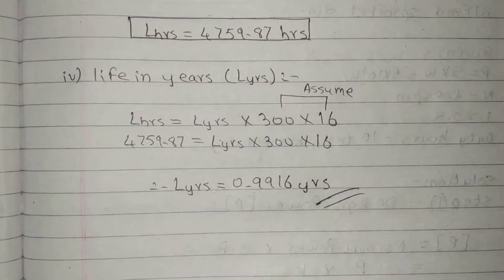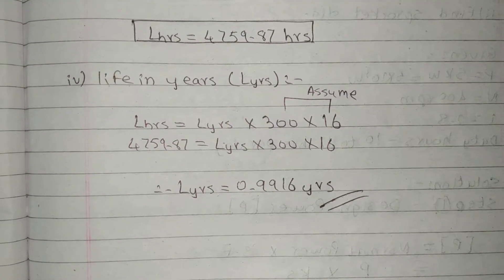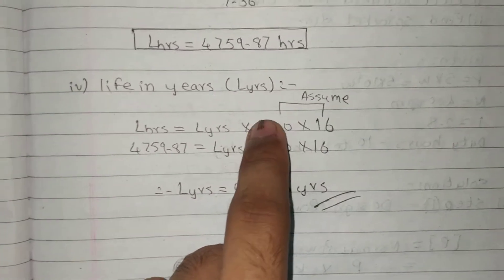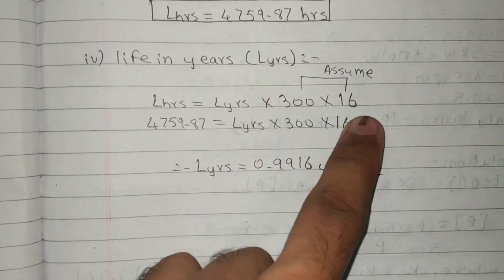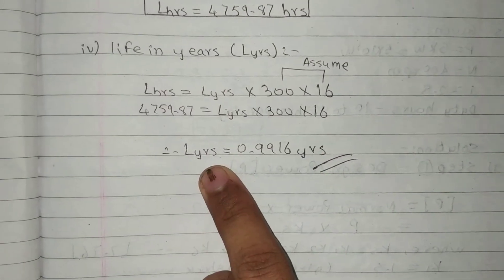Life in years. L years formula: L hours into 300 into 16. L years into L of working days into L of working hours. L of working day not given. Working day not given. So we'll put this and life in years will be calculated.